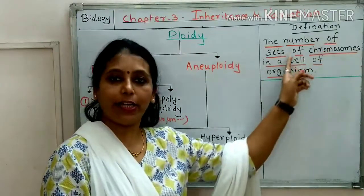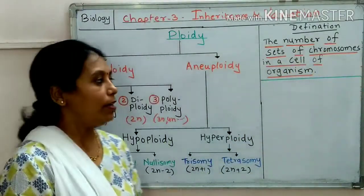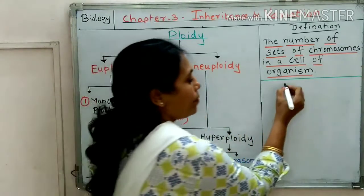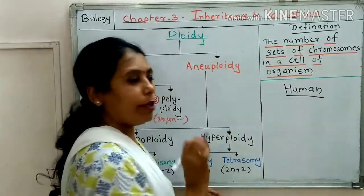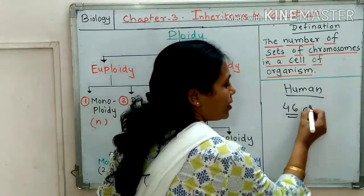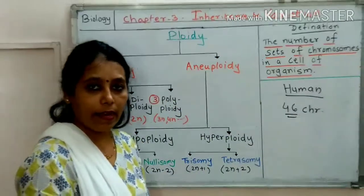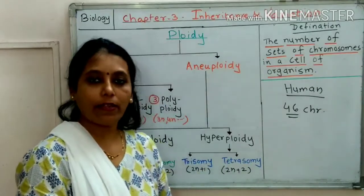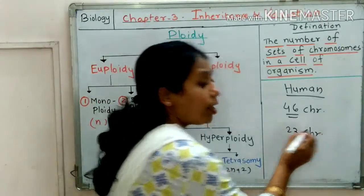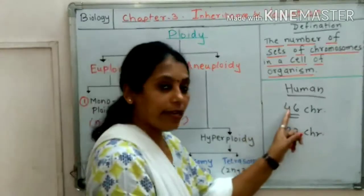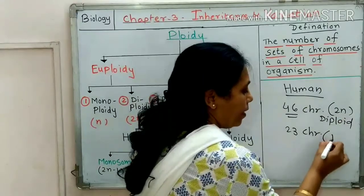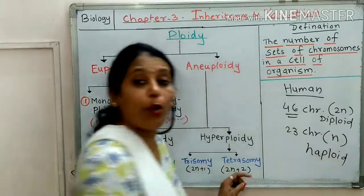Now what do you mean by number of sets of chromosomes in human beings? We know human beings have 46 chromosomes. But when gametes are formed, this 46 chromosomes is reduced to half — it becomes 23 chromosomes only. This condition with 46 chromosomes is called the diploid condition, and the condition with 23 chromosomes is called the haploid condition.